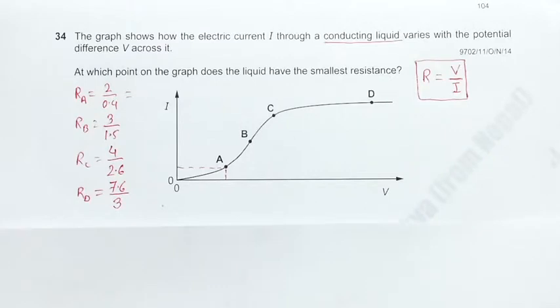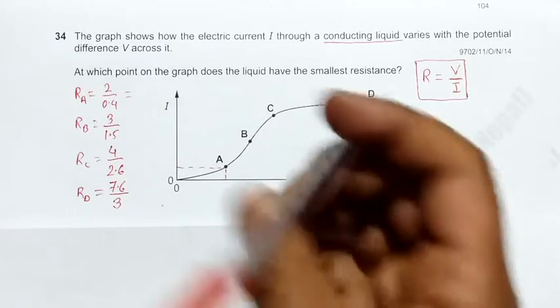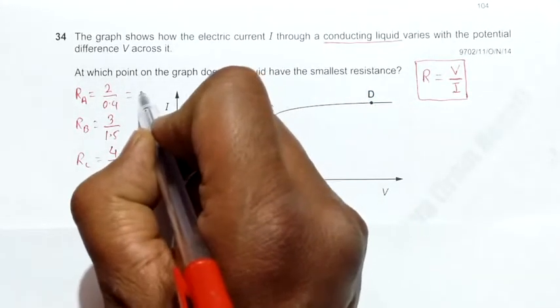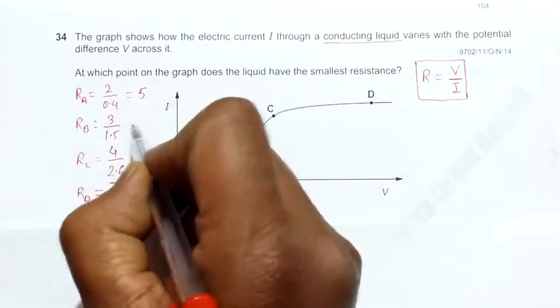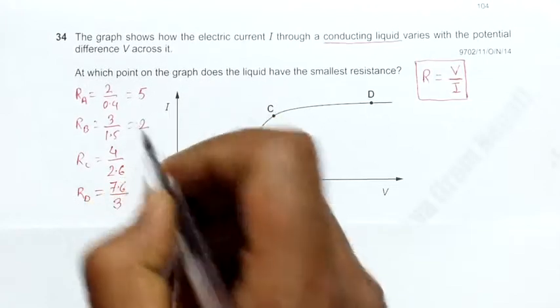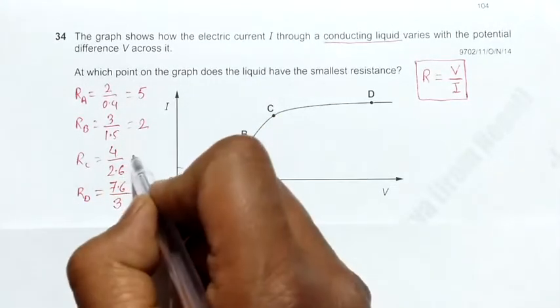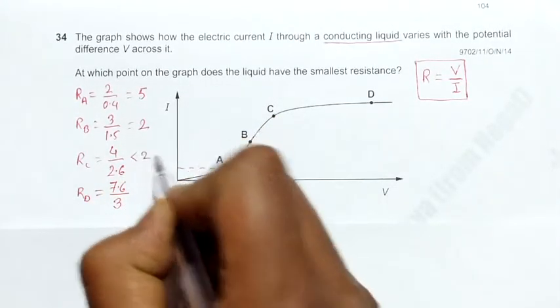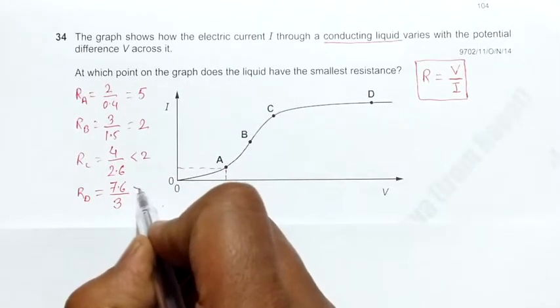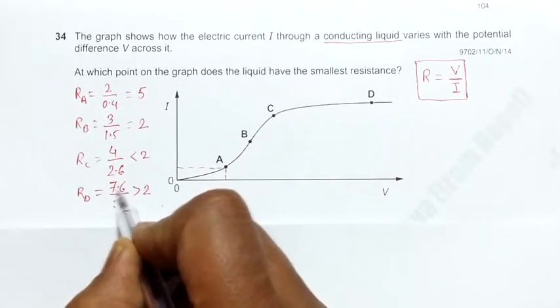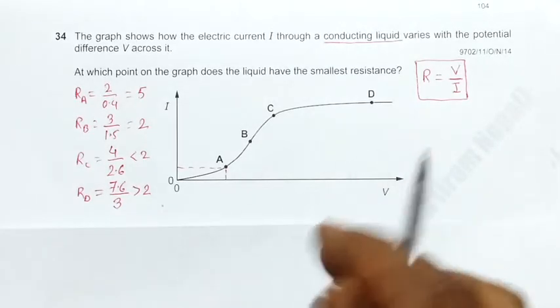Now if we do the calculations mathematically, the first ratio will be around 5, the second will be 2, C will be somewhat less than 2, and D will be slightly more than 2 because it's 7.6 to 3.